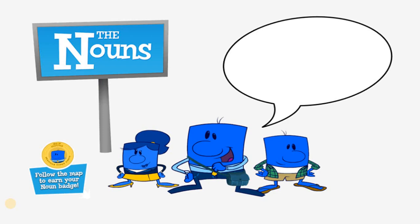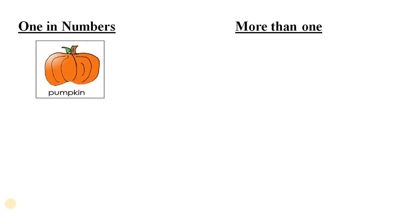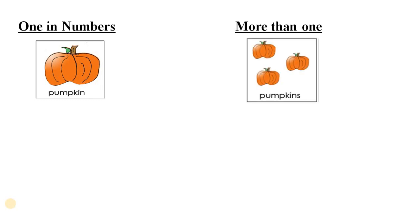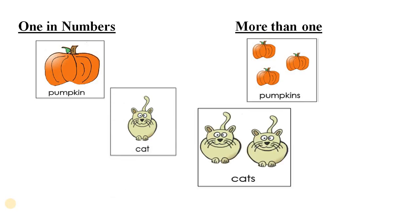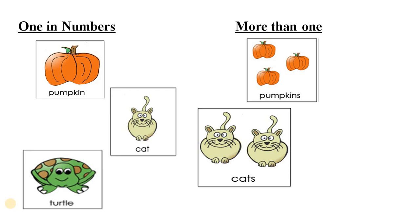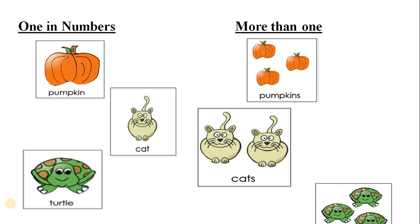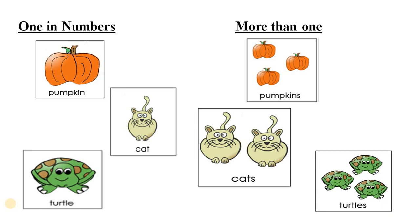Have a look at these pictures — one in numbers and more than one. Here is one pumpkin and here are three pumpkins, means more than one. One cat, two cats means more than one. One turtle and there are three turtles means more than one. In the first column, everything is one in number means singular, and in the second, everything is more than one means plural.